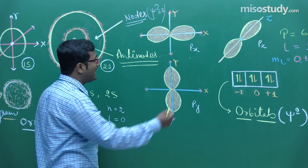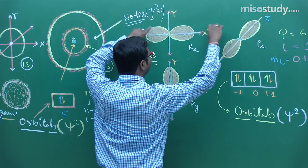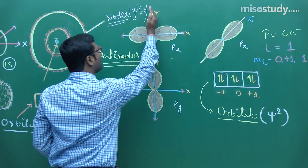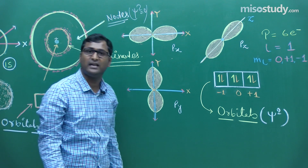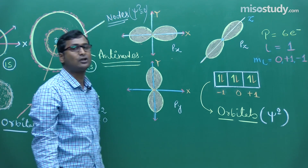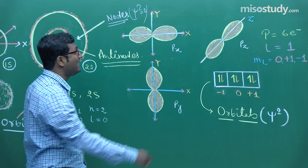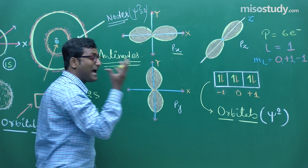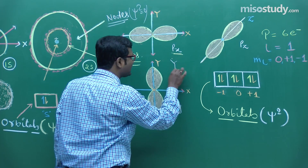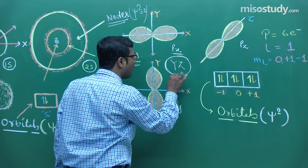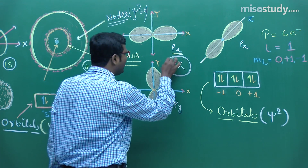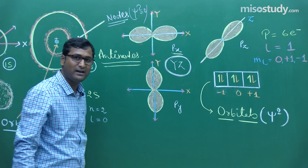Looking at the px, py, and pz orbitals: for px, along the x-axis the probability of finding an electron is maximum. But at certain places the probability is very low. For px, the x-axis has the maximum electron density, so the yz-plane is the nodal plane — the place where the probability of finding an electron is very low or zero.